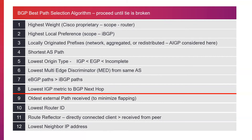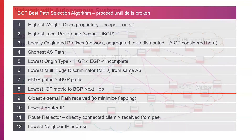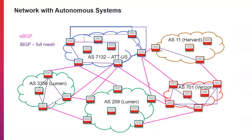The next thing is the lowest multi-exit discriminator, or MED, from the same AS. With local preference we told our own AS which next hop to prefer. With MED, if you have multiple egress routers between two ASs, you can tell the other AS to prefer a particular router by advertising it with the lowest MED — zero is the default MED. If you want to make other routers less preferable, you set their MED values higher. In this way, one AS is influencing the other AS on how it sends traffic — sort of the reverse of local preference.